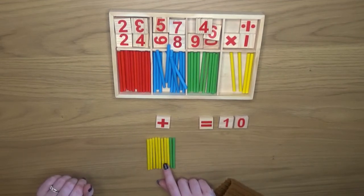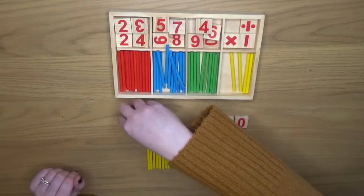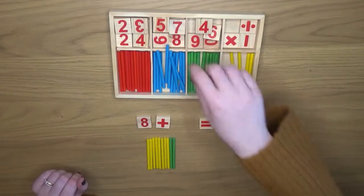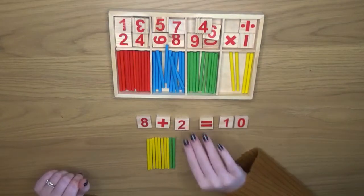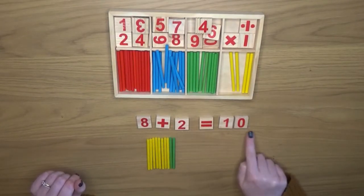We found we have eight yellow ones so we select the numeral eight and two green ones so we select the numeral two. Eight and two make ten.